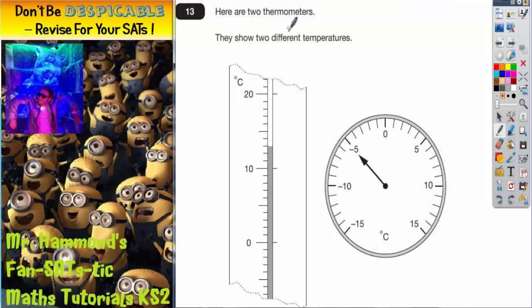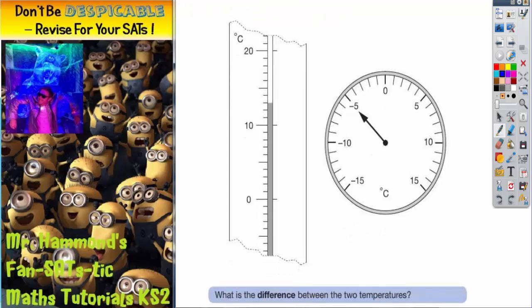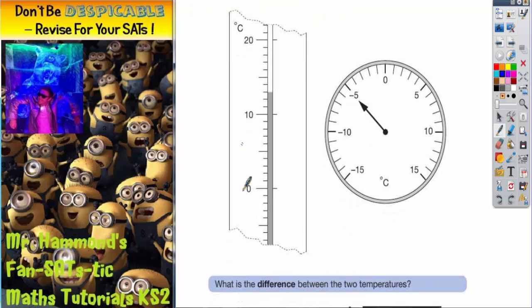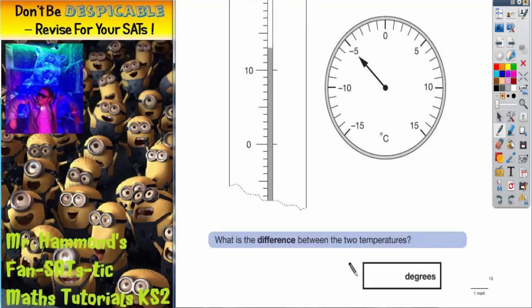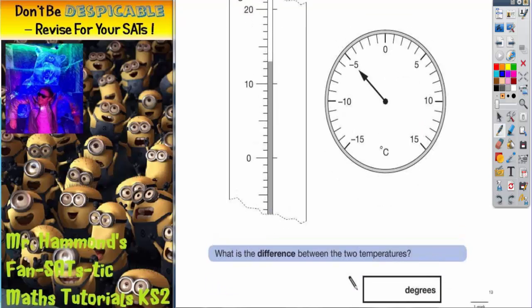Question 13. Here are two thermometers. They show two different temperatures. So as you can see we've got a vertical thermometer and a round thermometer. And it says what is the difference between the two temperatures?